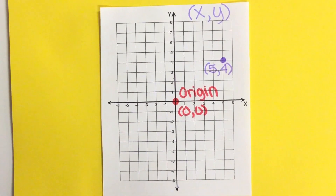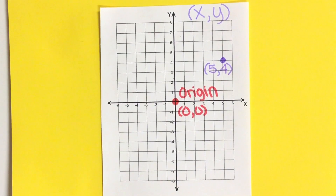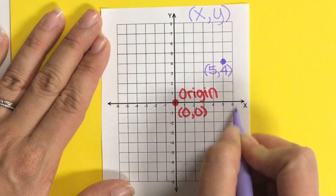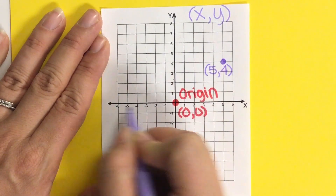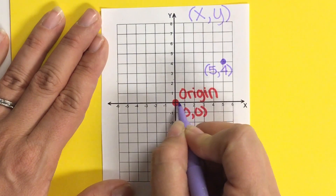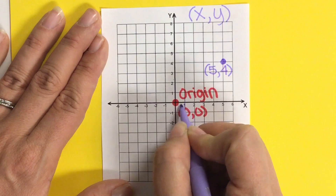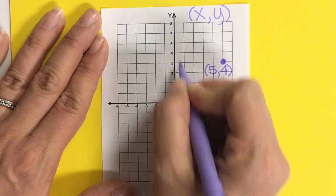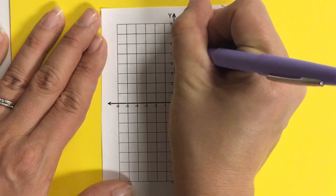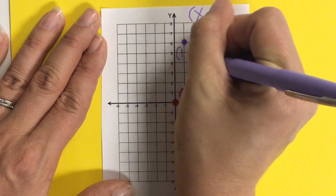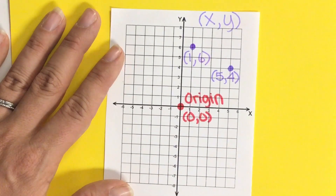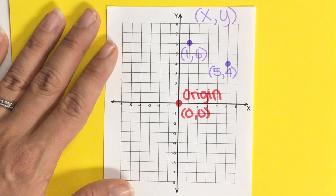Let's plot another point. The ordered pair (1, 6) — start with the x-axis, go right one because it's positive, then up six. Plot the point and label it (1, 6). Always close the parentheses and make sure it's labeled with parentheses. This is called quadrant one.